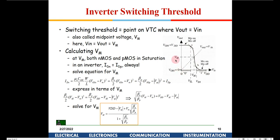Before understanding Schmitt trigger operation, let's recall inverter switching threshold voltage VM from VLSI classes. VM is the point where a line at 45 degrees (Vout = Vin) intersects the VTC curve. If VM is at VDD/2, the inverter is said to have a symmetrically placed VTC.